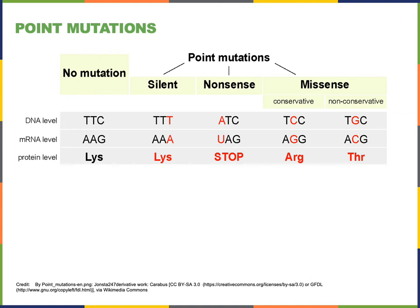A mutation is a change in the nucleotide sequence of a gene. A mutation could result from a mistake during DNA replication, or could be a result of an environmental factor known as a mutagen. There are a variety of chemicals that are mutagens that could cause a change in the DNA sequence. Also, extreme UV light exposure from intense sunlight can damage the DNA and is another example of a mutagen.